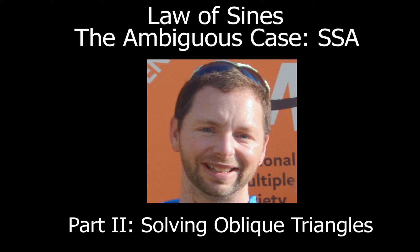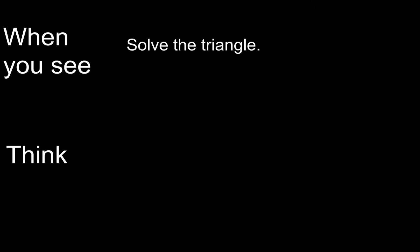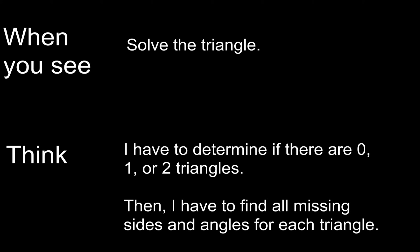If you don't remember what an oblique triangle is, it just means a triangle that is not right. Now one of the first things that you want to do is when you see the direction 'solve the triangle,' you want to think to yourself: I have to determine if there are zero, one, or two triangles, and then after that I've got to find all the missing stuff for each one of the triangles.